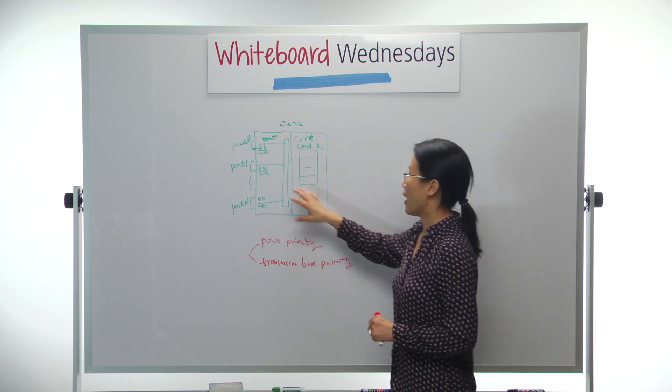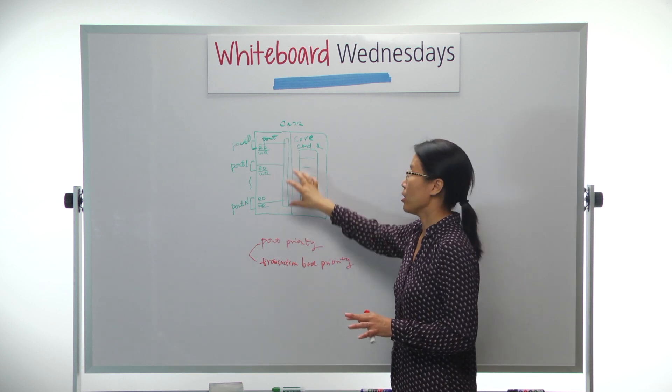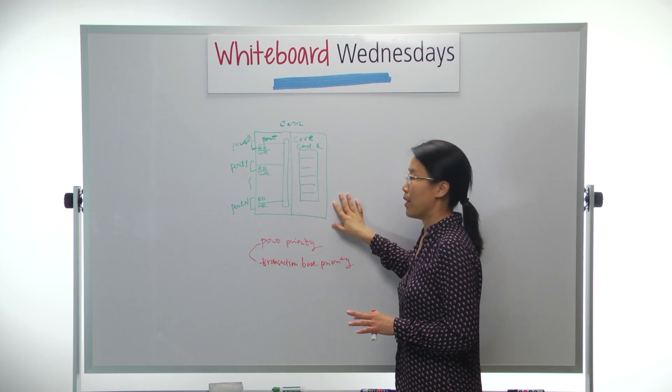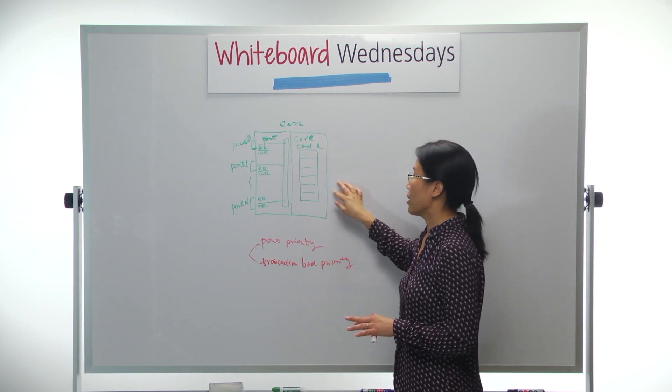So the controller has two big parts. One is the port, one is the command core, or the controller core.